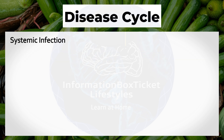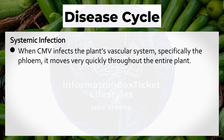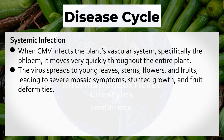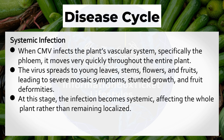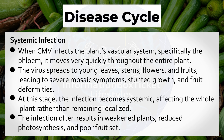Systemic Infection: When CMV infects the plant's vascular system, specifically the phloem, it moves very quickly throughout the entire plant. The virus spreads to young leaves, stems, flowers, and fruits, leading to severe mosaic symptoms, stunted growth, and fruit deformities. At this stage, the infection becomes systemic, affecting the whole plant rather than remaining localized. The infection often results in weakened plants, reduced photosynthesis, and poor fruit set. Crop yield and quality are enormously affected due to the systemic infection.